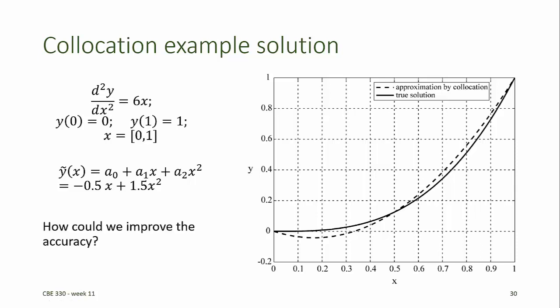How could we improve the accuracy of the collocation method? One way is to add more collocation points and thereby use a higher order polynomial for y-tilde. Our approximate solution y-tilde doesn't have to be a polynomial — it could be a sum of sine and cosine functions, an exponential, a power law, or transcendental functions. It could also be nonlinear in the unknown coefficients, although that would require using iterative methods to solve for the unknown coefficients. When selecting an approximate solution function, you should choose a function that's easy to differentiate because you're going to need to find derivatives of it to substitute into the defining equation.